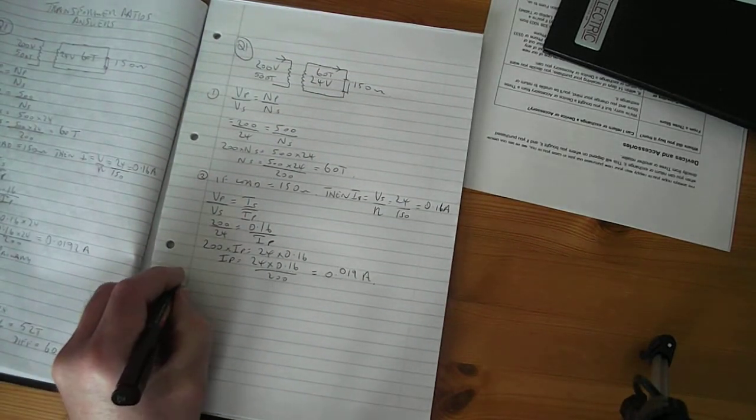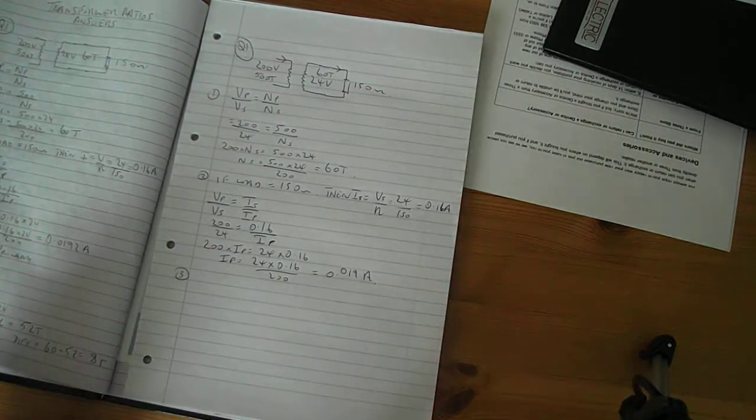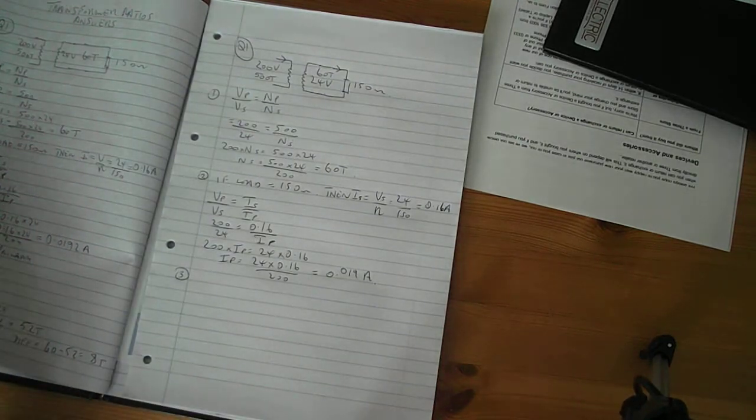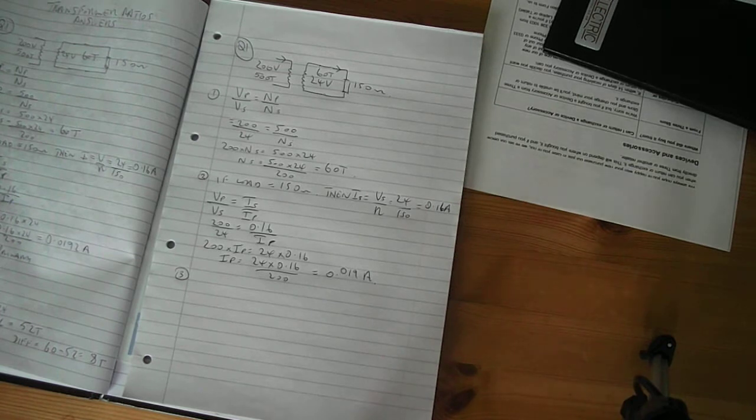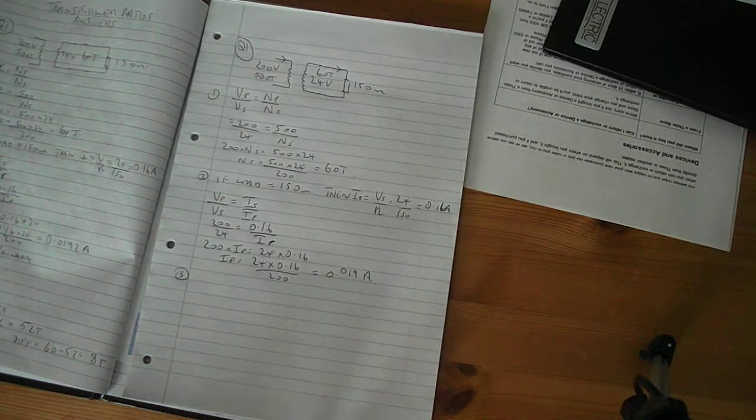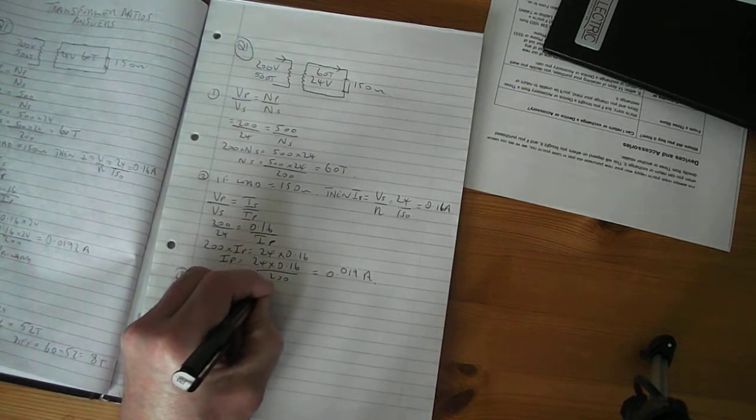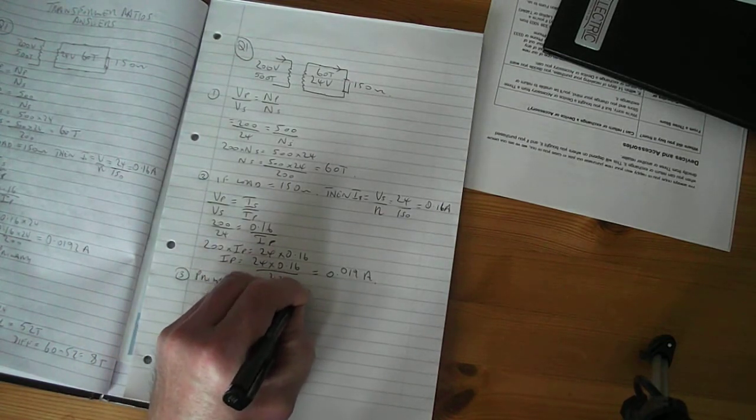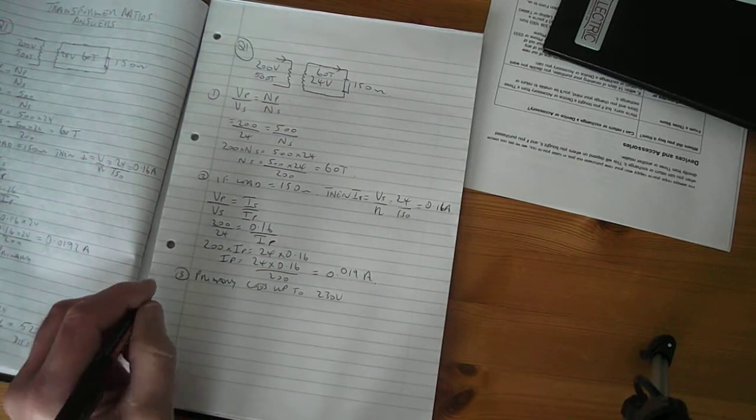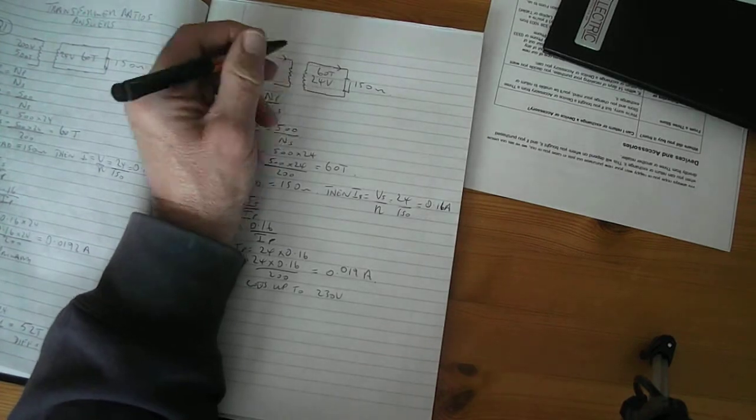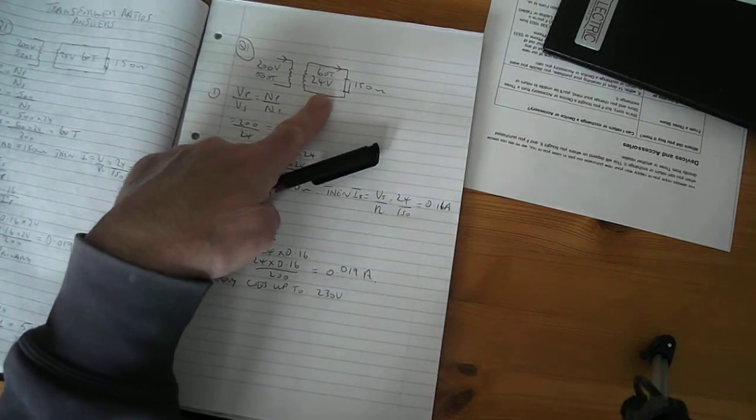So the third part, how are we doing for time? Okay, four minutes I've got. The third part, we're now saying that the primary voltage goes up to 230 volts. So now, what are these new turns going to be? We've got to reduce these turns to keep this output at 24 volts.